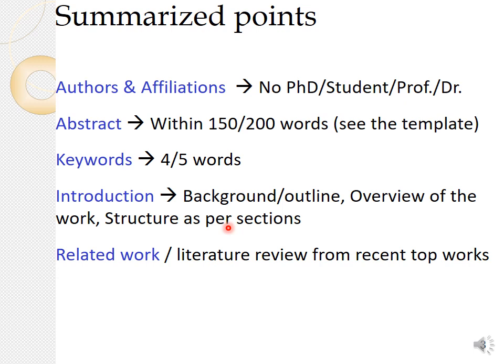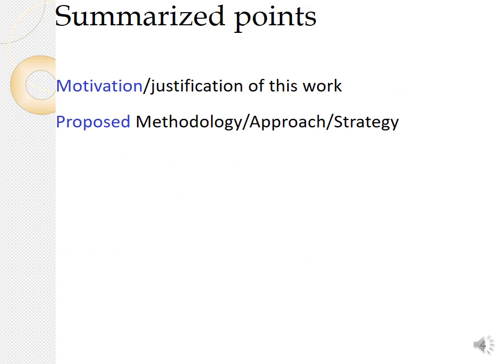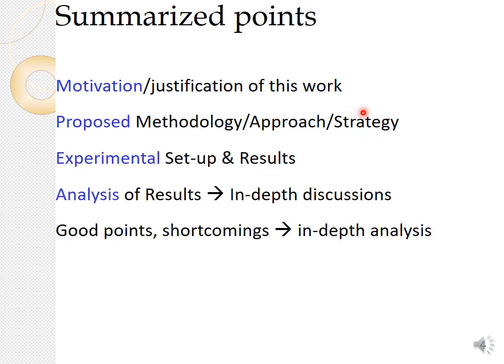If your paper is short — say 4, 8, or 10 pages — do not make 8 or 9 sections; try to keep it to 5 or 6 unless really necessary. Do not create a section that is only one paragraph or half a paragraph. Related work or literature review should cover recent and top works and provide motivation or justification for your current work. Then propose a new methodology, approach, or experiment, being clear and concise. Experimental setup and results follow.